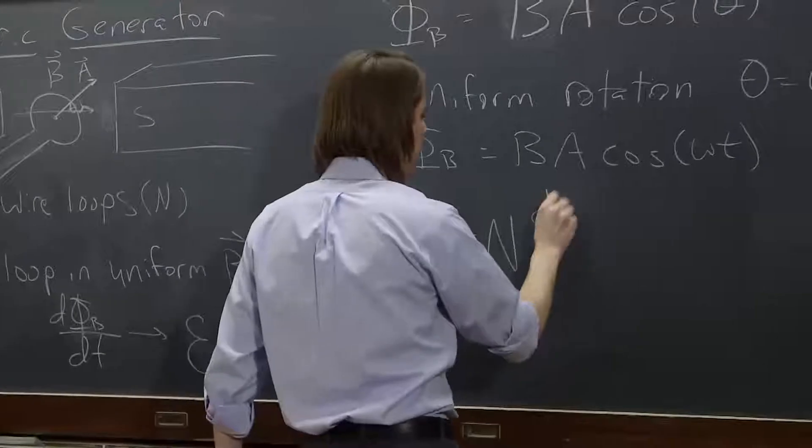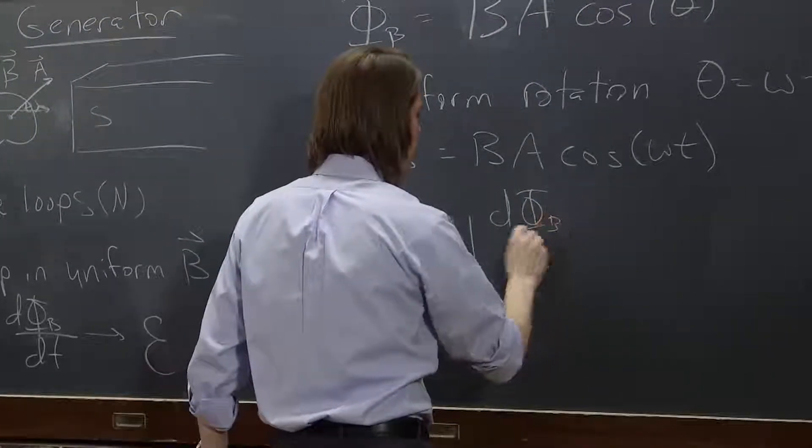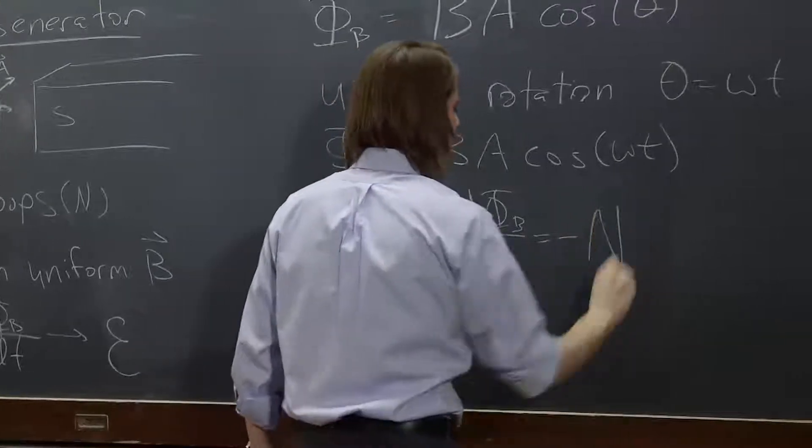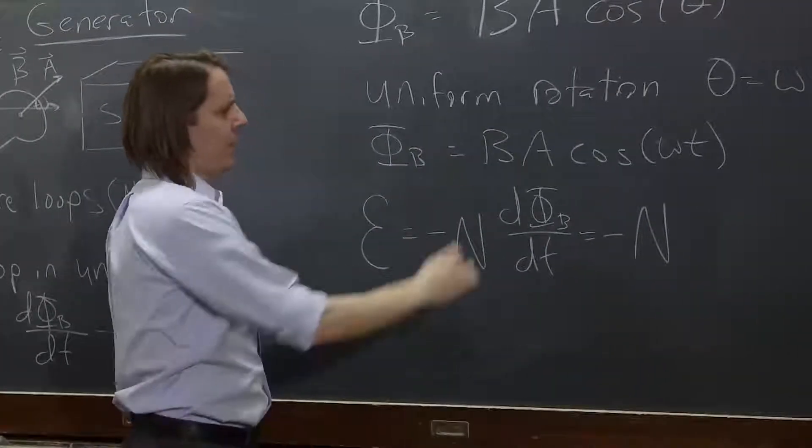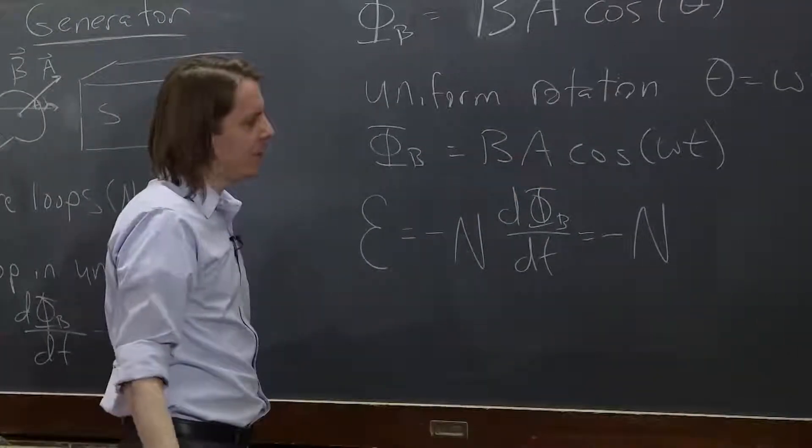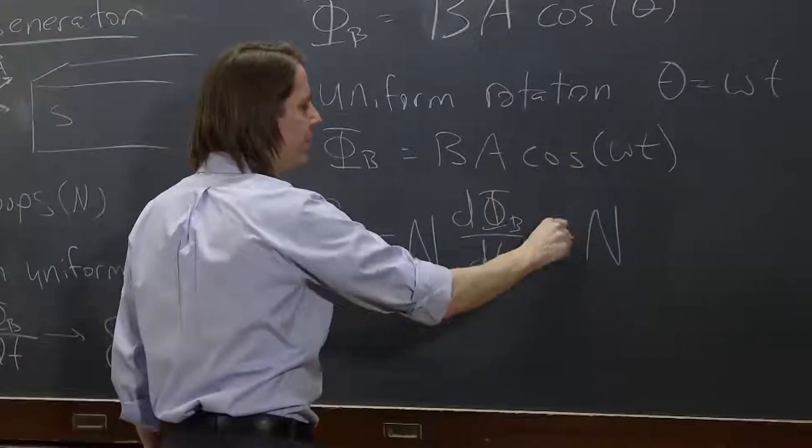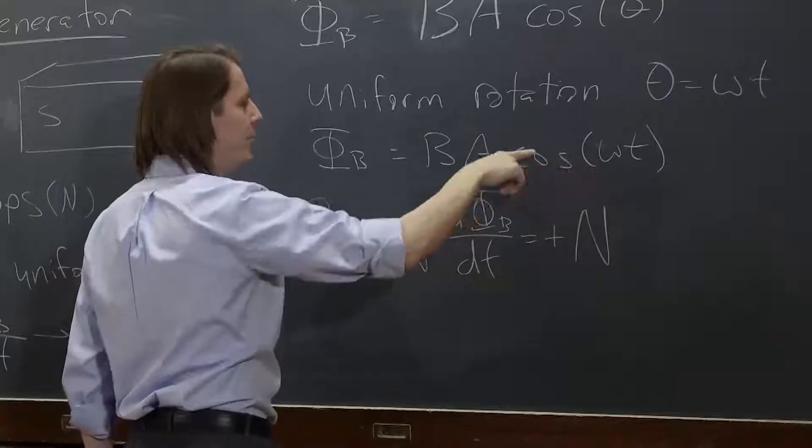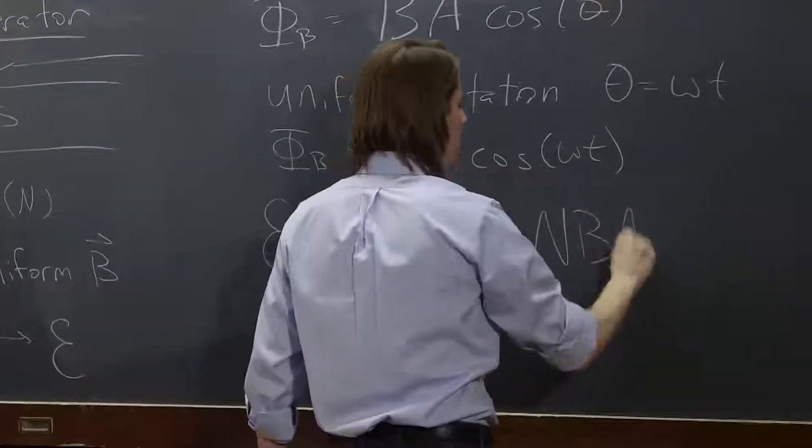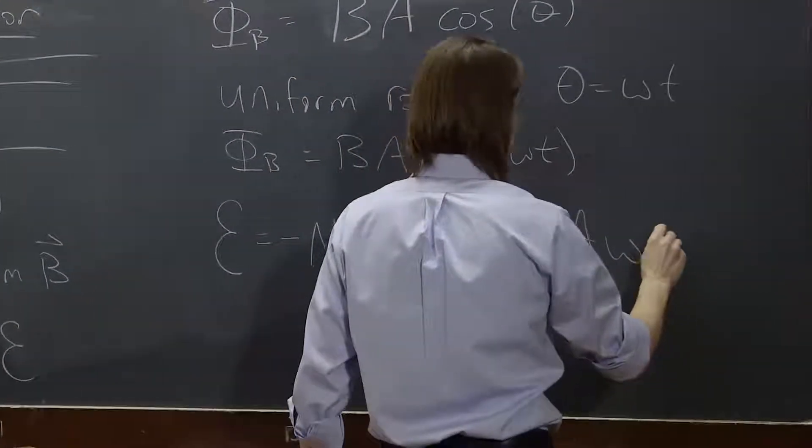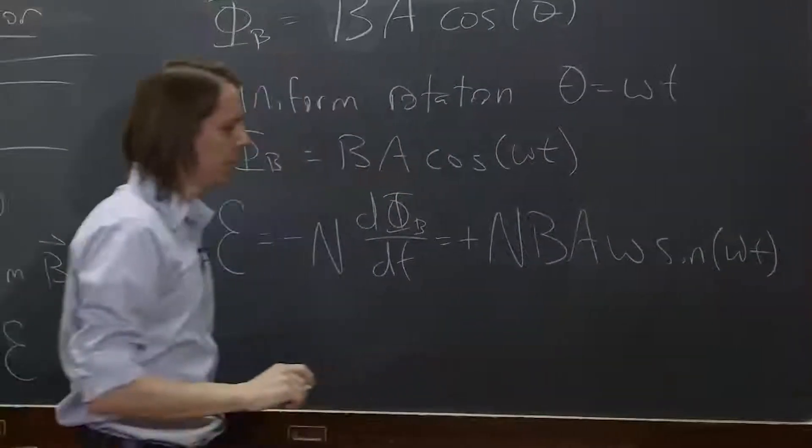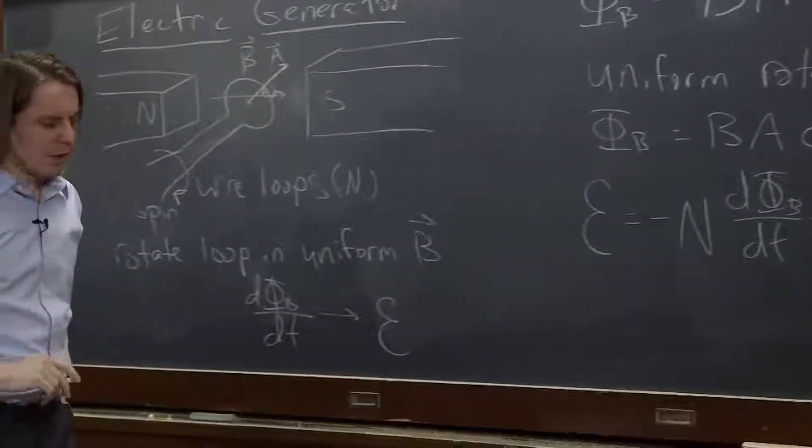So let's see what that is. That's minus N. And the derivative of this with respect to time is derivative of cosine is negative sine. And we pull out an omega. So it's B A omega sine omega t. So that's our EMF.